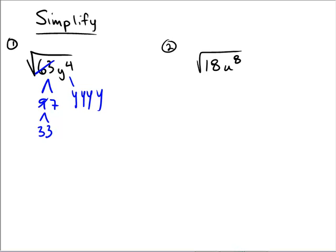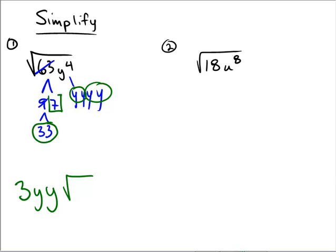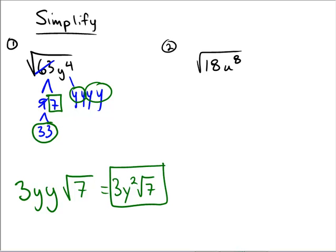Now to simplify the radical we circle the pairs which escape from prison. So we get a pair of 3's, a pair of y's, and another pair of y's — and left in the prison is the number 7. After we simplify and multiply out, we get 3y squared radical 7. And that's the final answer.